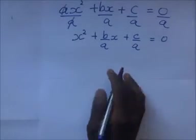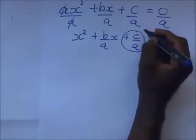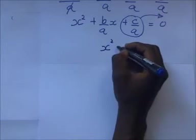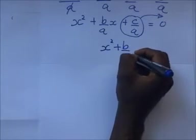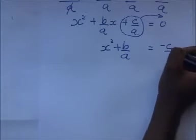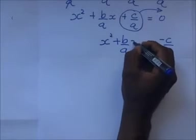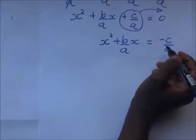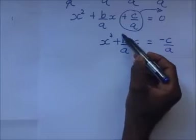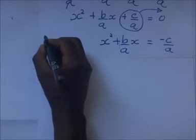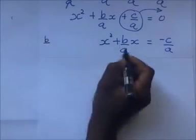From that point we take the c/a to the other side of the equation, so it becomes x squared plus (b/a)x is equal to negative c/a. Now we look at the coefficient of x, which is b/a. We divide this coefficient by 2, giving us b/a divided by 2.